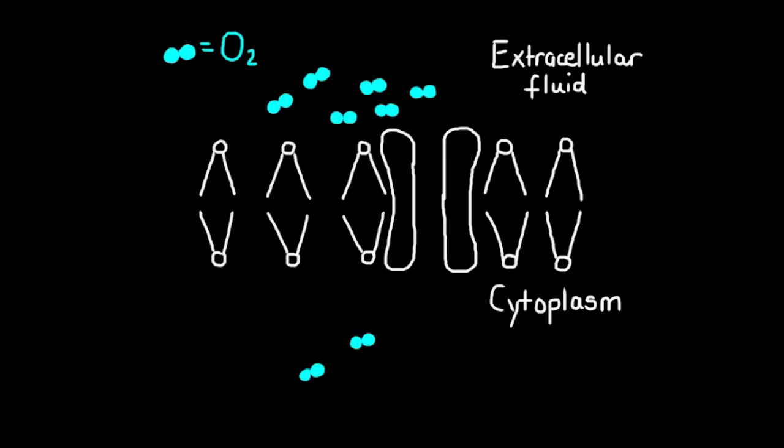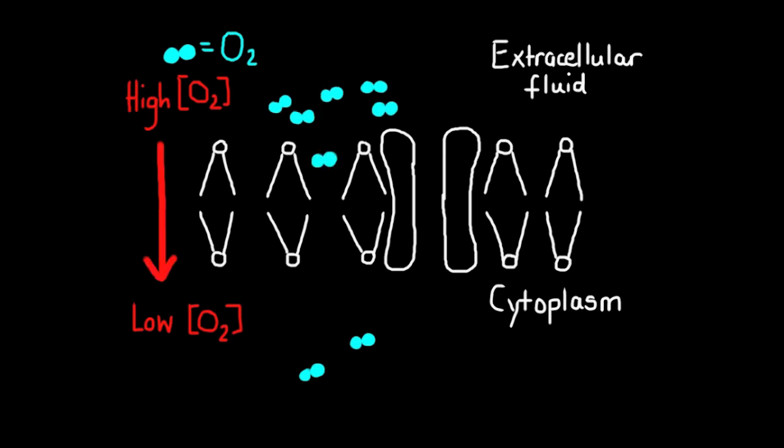Simple diffusion is defined as molecules moving from a region of high concentration to a region of low concentration. In the example shown here, we have a high concentration of oxygen in the extracellular fluid and a lower concentration of oxygen in the cytoplasm, and so oxygen is moving from the higher concentration in the extracellular fluid to the lower concentration in the cytoplasm.